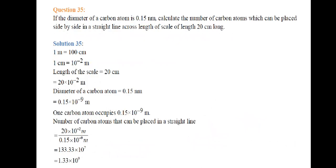Next part: If the diameter of a carbon atom is 0.15 nanometers, calculate the number of carbon atoms which can be placed side by side in a straight line across the length of a scale 20 centimeters long. We need to find how many carbon atoms fit in 20 cm.